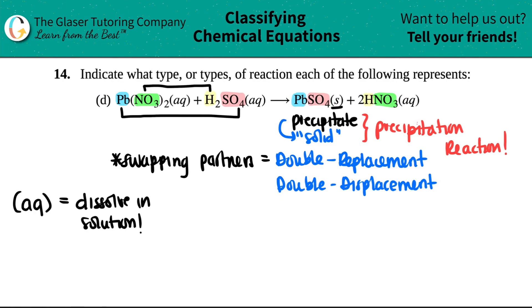So this one, technically, the bigger scheme is the double replacement or the double displacement. But then if you look a little closer, it's actually a precipitation reaction. And that's it.